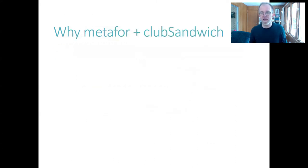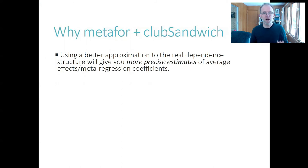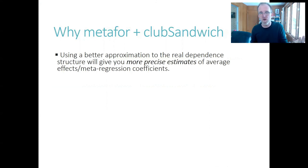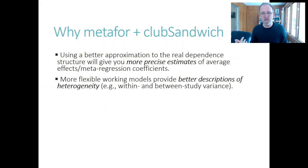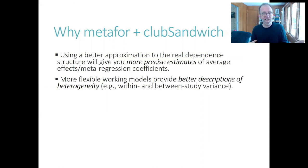So to sum up, why would I recommend that you consider moving to this metaphor plus club sandwich approach? First, a more flexible model that better approximates the real dependence structure of your data will give you more precise estimates of average effects or meta-regression coefficients. In simulation work, we found that there are some circumstances where the precision gains can really be quite substantial — like standard errors that are half the size of what you get from the standard approach with RoboMeta. A second advantage is that using more flexible working models gives you better descriptions of heterogeneity, such as estimates of both the between-study variation and within-study variation. Rather than just assuming away within-study heterogeneity, you can use this metaphor working model to assess and investigate it, at least tentatively.